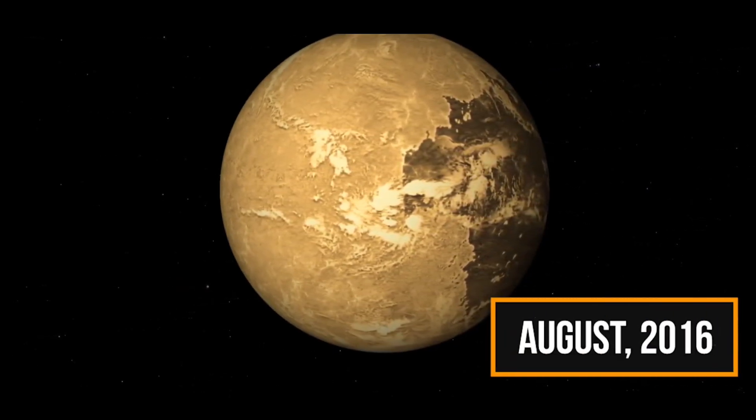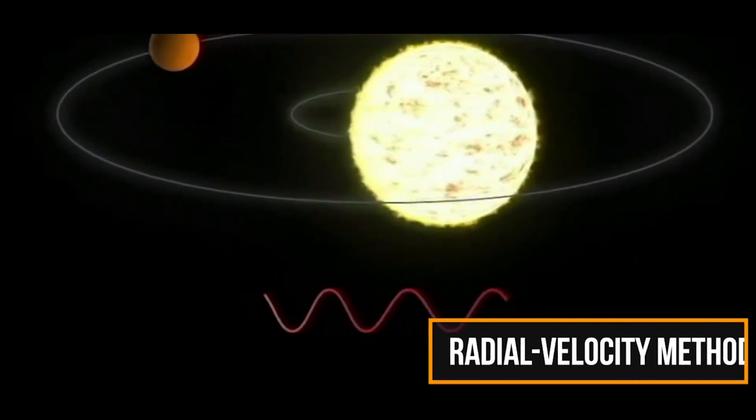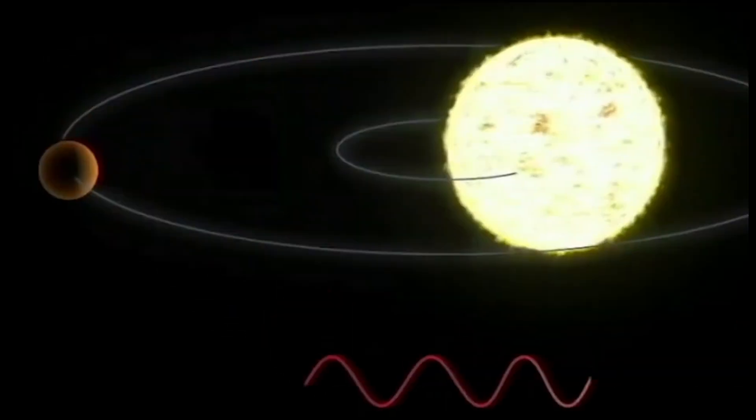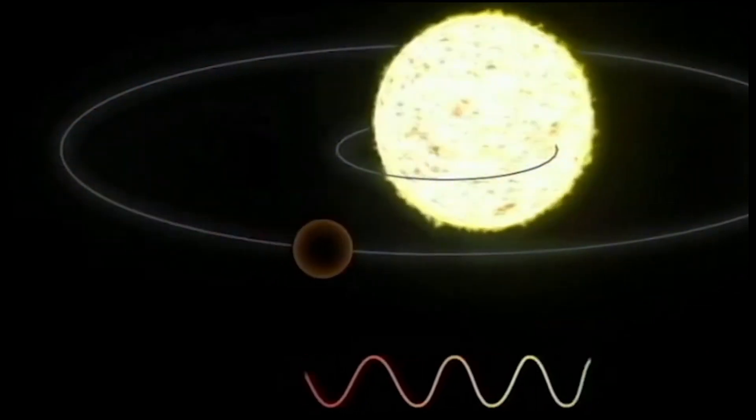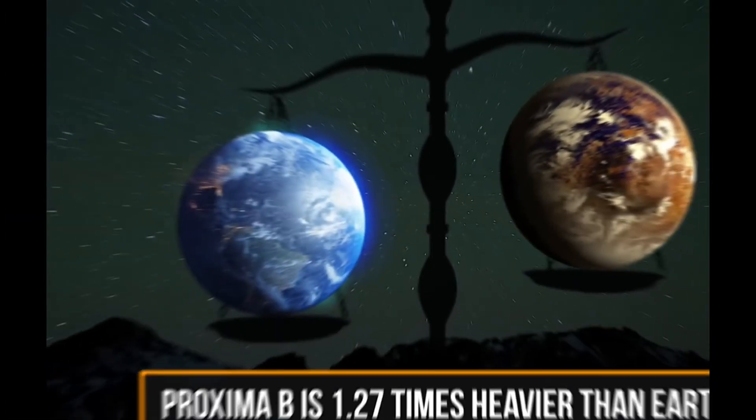Proxima b was discovered in 2016 and, according to our sources, is located in the habitable zone in the Proxima Centauri star, which is what it orbits around. The star is, in fact, the sun's neighbor while being only 4.25 light-years away, which is one of the reasons why we were able to discover it.